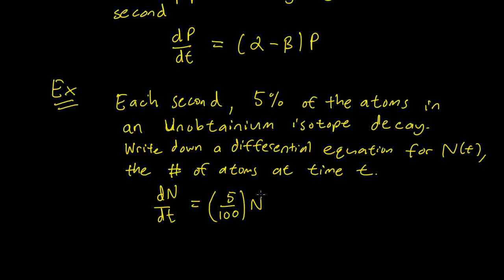And remember that we are losing atoms every second. So a good sanity check is that if your population is increasing, this constant here should be positive. But if your population is decreasing, this constant here should be negative. And since our atoms are decaying, the number of atoms are decreasing.